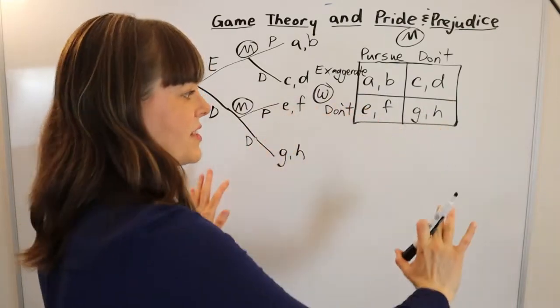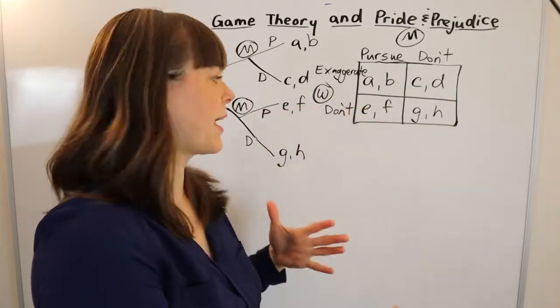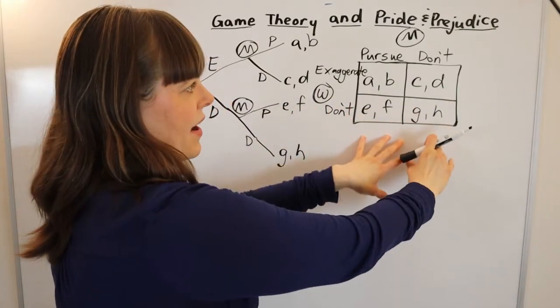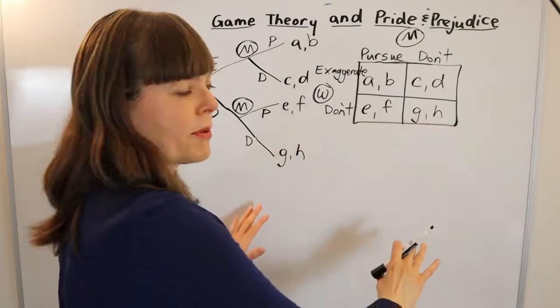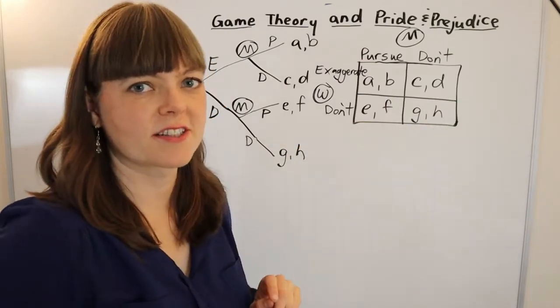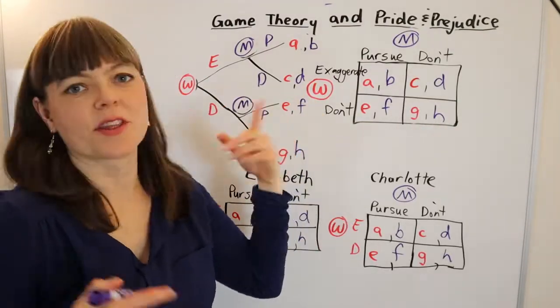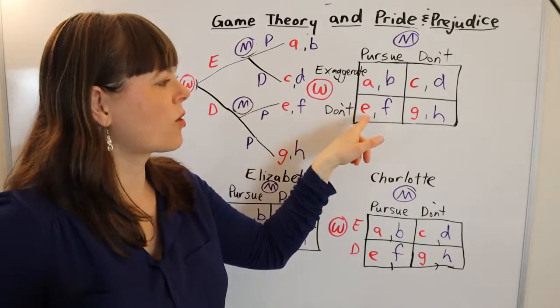Now we know that we have two different perspectives on this game. So I'm going to set up a game theory matrix for both people, for Elizabeth and Charlotte. And I decided to color code it so that it was easy for you to see what are player one's payoffs and what are player two's payoffs.